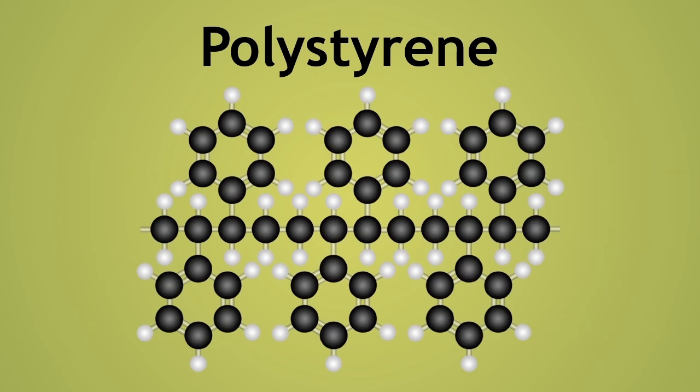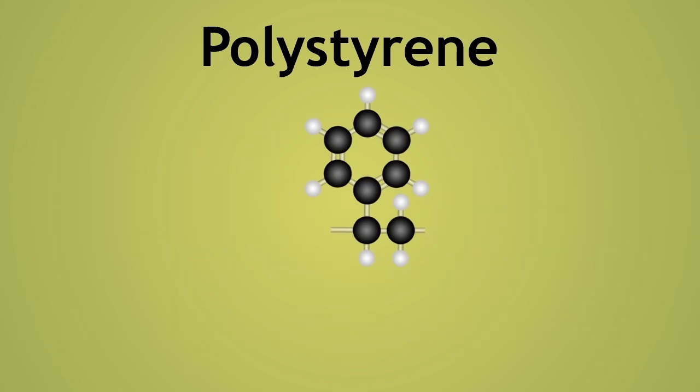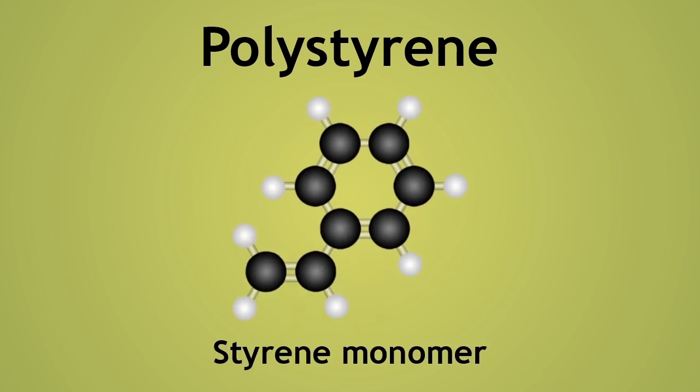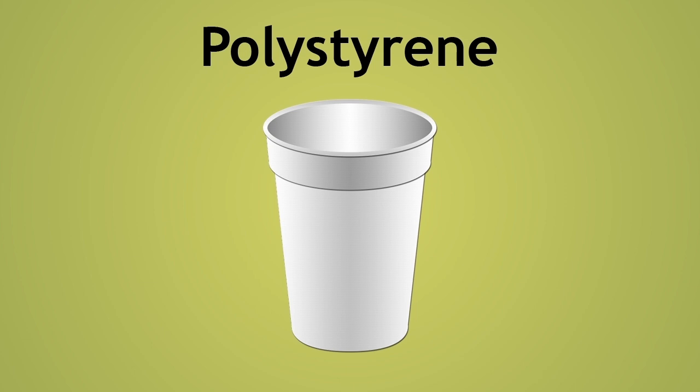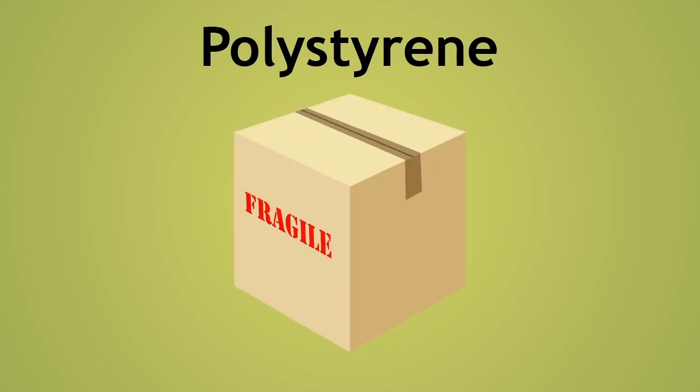Polystyrene is synthesized from the polymerization of styrene monomers. You may have encountered polystyrene as white cups and food packaging materials. Expanded polystyrene is used in packaging and shipping to protect the contents from being damaged.